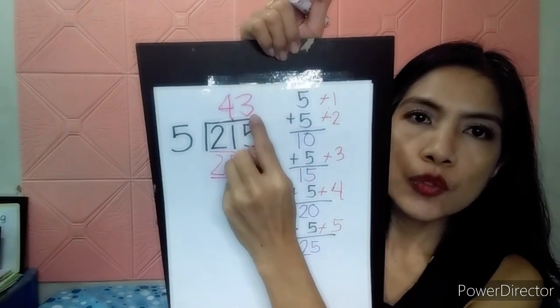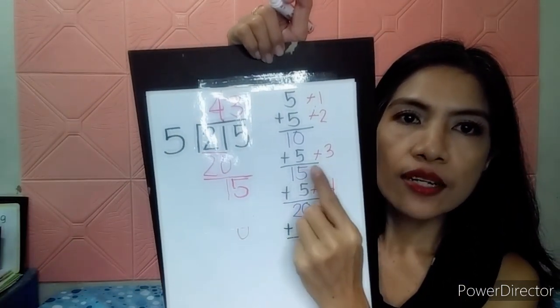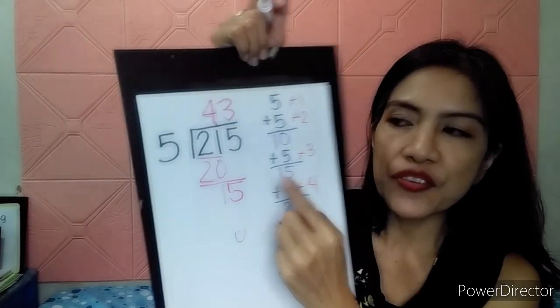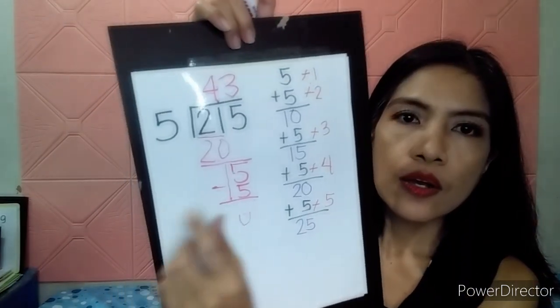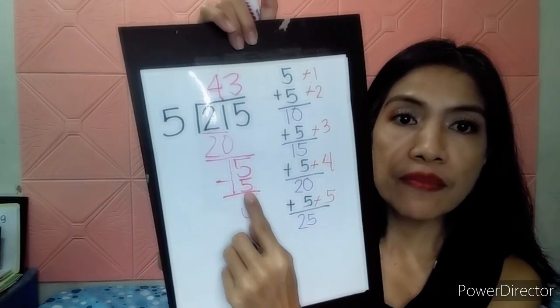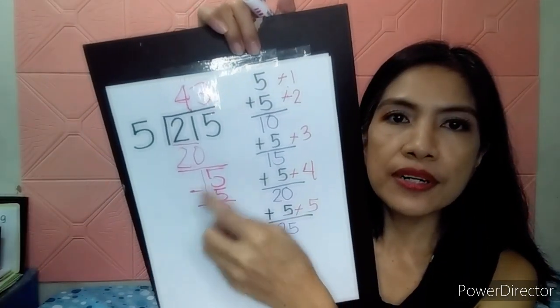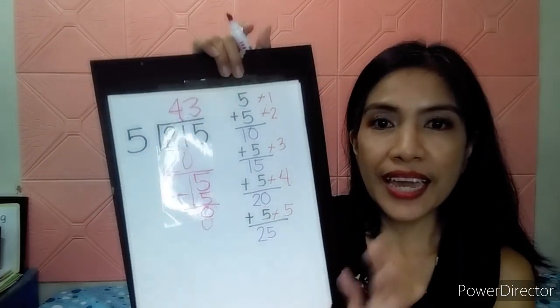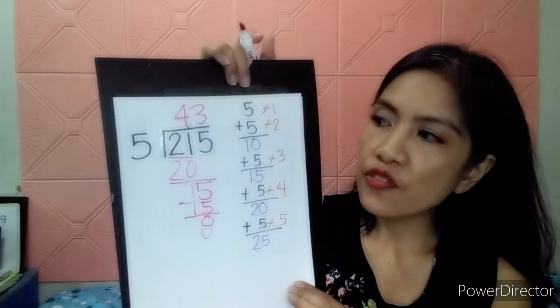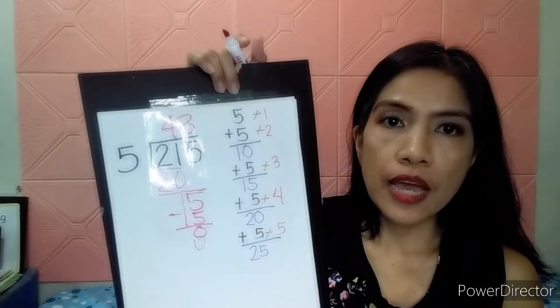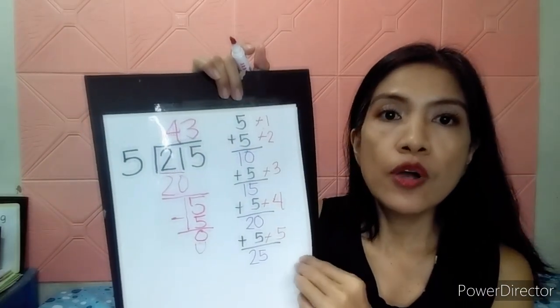There. So, I wrote here. 3 times 5 is 15. And, let's subtract. 5 minus 5 is 0. 1 minus 1 is 0. See? It's 0. So, is there any number here? No more. So, that's how you divide 215 by 5. It will give us the answer of 43.